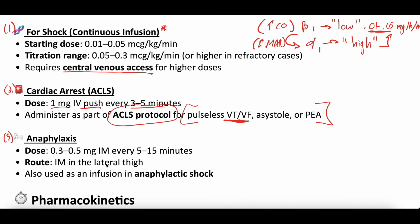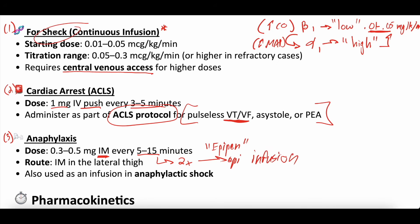For anaphylaxis, you give it IM intramuscularly — this is an EpiPen. The dose is 0.3 to 0.5 milligrams intramuscular every five to 15 minutes. If it is refractory after two doses, you start an epinephrine infusion, similar to the continuous infusion for shock. The lateral thigh is the common injection site. If it's refractory to intramuscular doses, you can change over to an epinephrine infusion for anaphylactic shock.